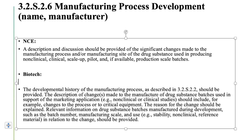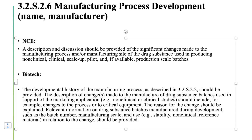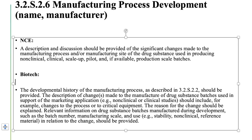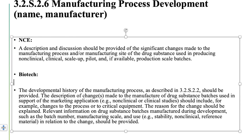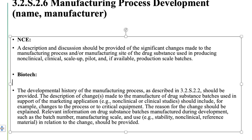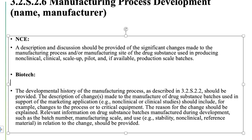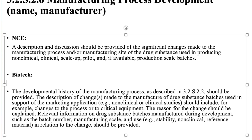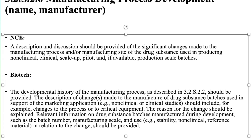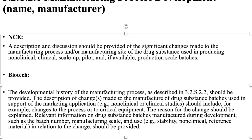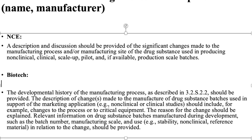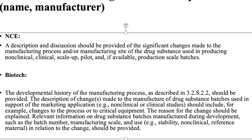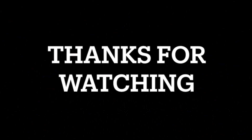3.2.S.2.6 Manufacturing Process Development (Name, Manufacturer): A description and discussion should be provided of the significant changes made to the manufacturing process and/or manufacturing site of the drug substance used in producing non-clinical, clinical, scale-up, pilot, and, if available, production scale batches. For biotech, the developmental history of the manufacturing process as described in 3.2.S.2.2 should be provided. The description of changes made to the manufacture of drug substance batches used in support of the marketing application — for example, non-clinical or clinical studies — should include changes to the process or to critical equipment, and the reason for the change should be explained. Relevant information on drug substance batches manufactured during development, such as the batch number, manufacturing scale, and use (e.g., stability, non-clinical, reference material), in relation to the change should be provided.